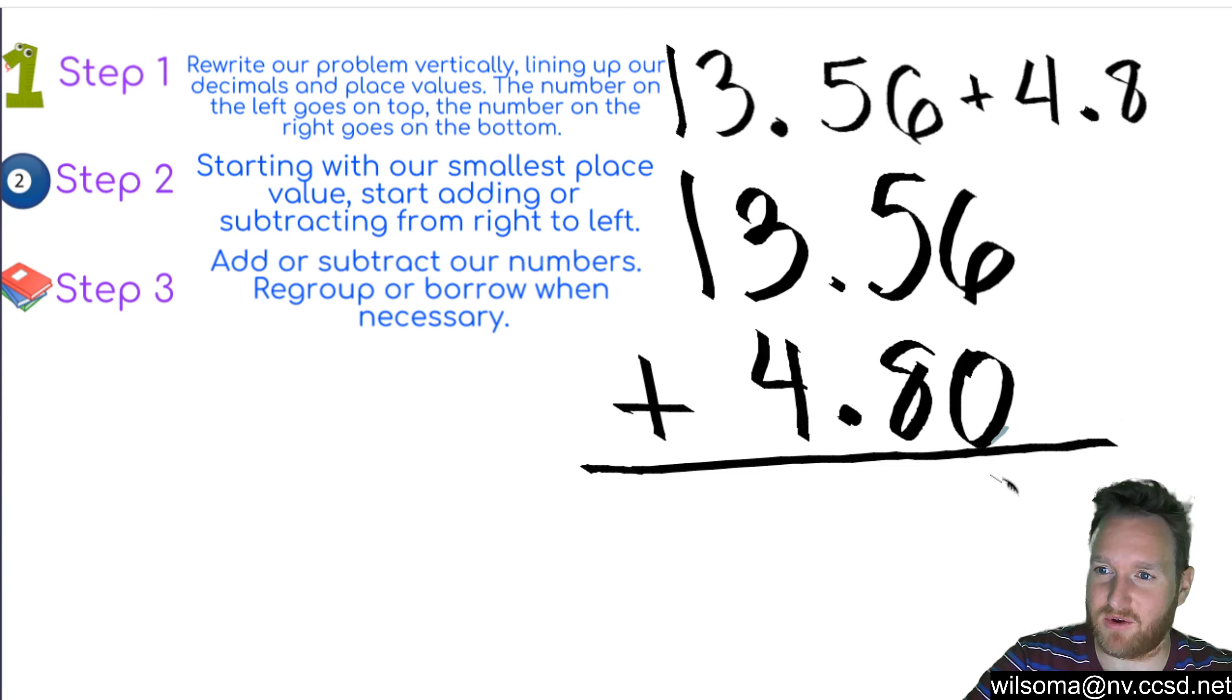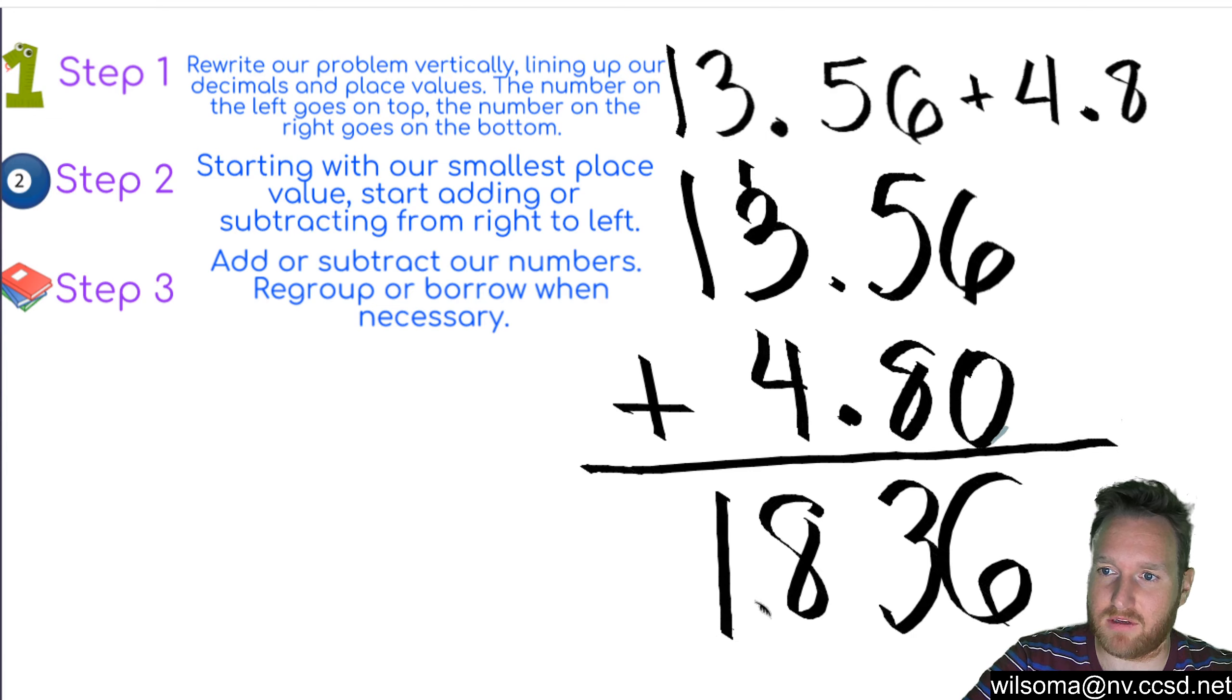So 6 plus 0 is 6. 5 plus 8 is going to be 13. So we're going to do 3, carry our 1. 1 plus 3 plus 4 is going to be 8. And then 1 plus nothing is 1.